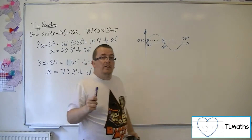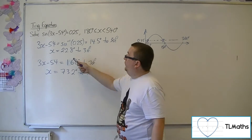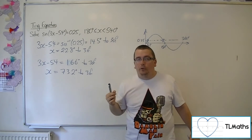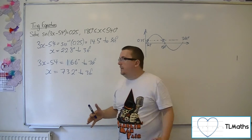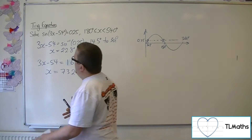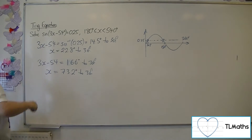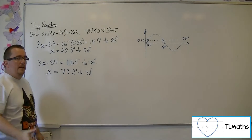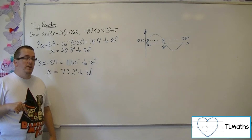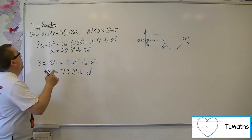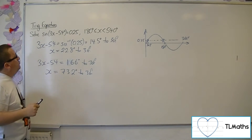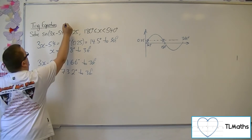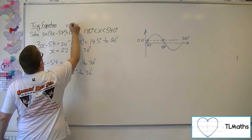Neither of these two answers are between 180 and 540, so neither of them are included. Now what I need to remember is that for sine of 3x minus 54, the period of that function will be one-third of 360 degrees, so 120. The period is 120 degrees.